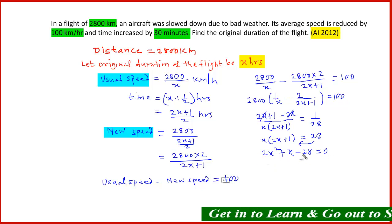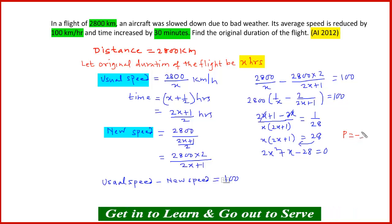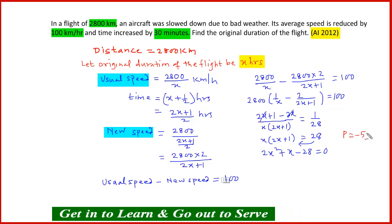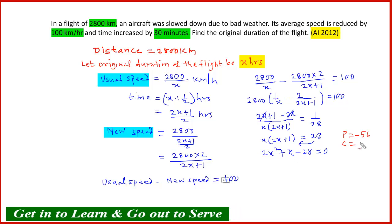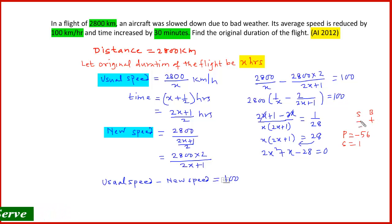Now solve this quadratic equation by splitting the middle term. We want a product of negative 56 (2 × 28) and a sum of 1. Since the sum is positive and product is negative, one number is positive and one is negative, and since the middle term is positive, the bigger number is positive. So 8 and 7: 8 × 7 = 56. Split the middle term as 2x² + 8x − 7x − 28 = 0.